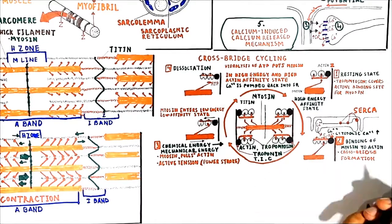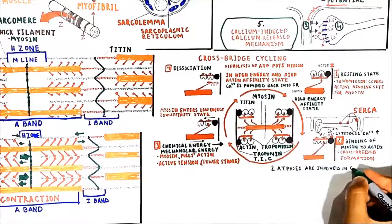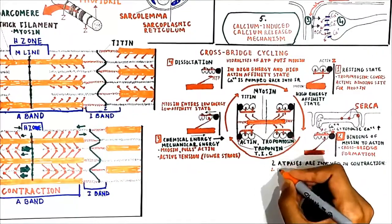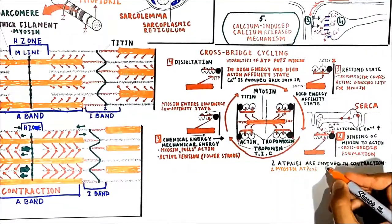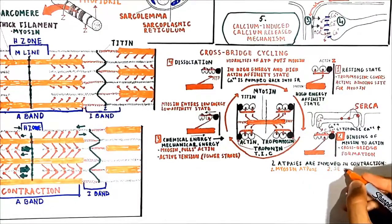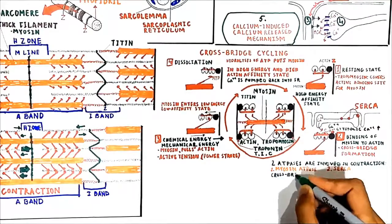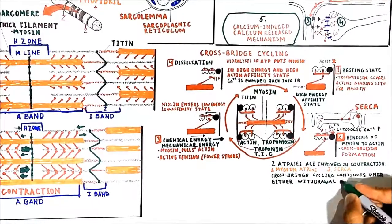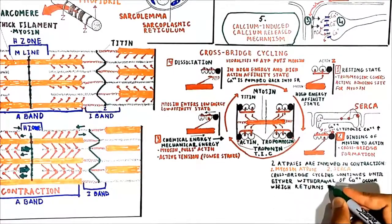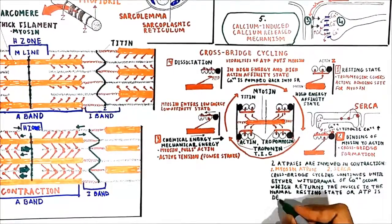So two ATPases are involved in contraction: myosin ATPase and sarcoplasmic/endoplasmic reticulum calcium ATPase (SERCA). Cross-bridge cycling and contraction continue until either withdrawal of calcium occurs — returning the muscle to the normal resting state — or ATP is depleted.